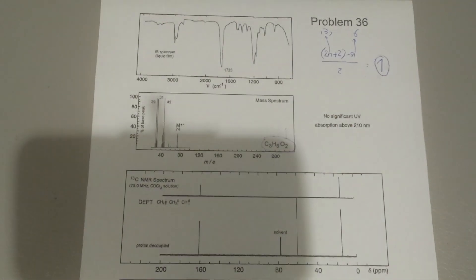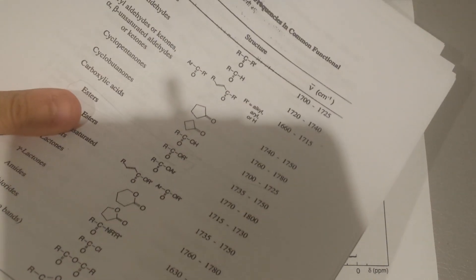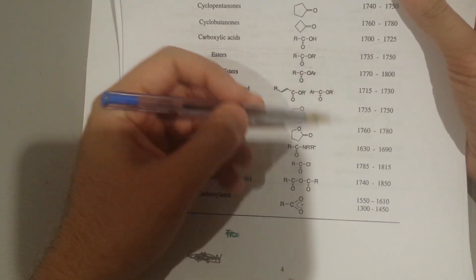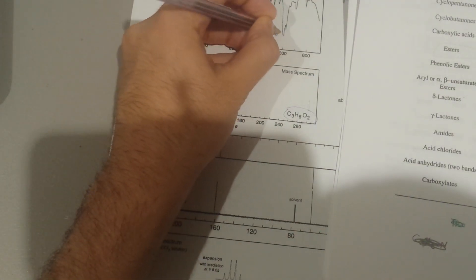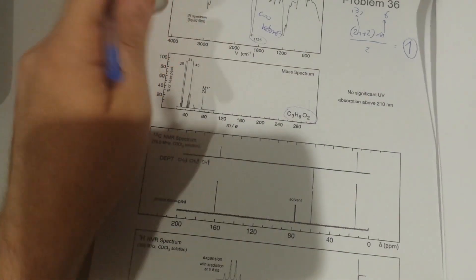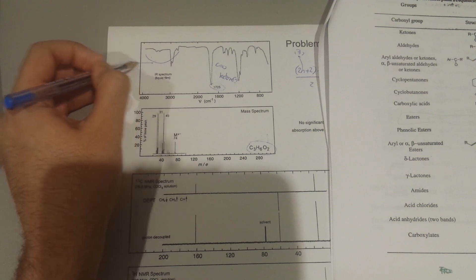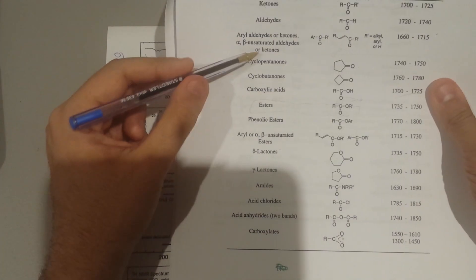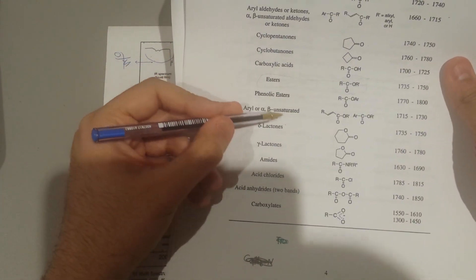Now we go to the IR spectrum. Using a reference table, we see a peak at 1725. That region can indicate ketones. We cannot have an aldehyde because there is no broad O-H peak present. We can also have an ester, which would fit well with the formula. So the possibilities are ketones or esters.